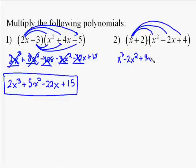And finally, we're going to multiply 2 times each thing in the second polynomial. So 2 times x squared is 2x squared. 2 times negative 2x is a negative 4x. And 2 times 4 is a positive 8.